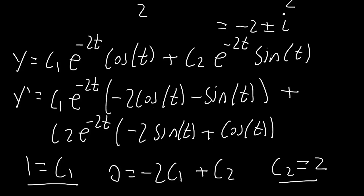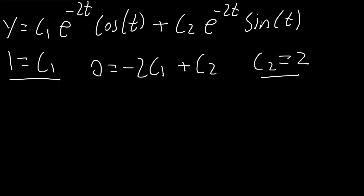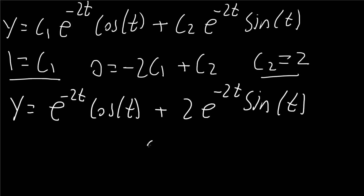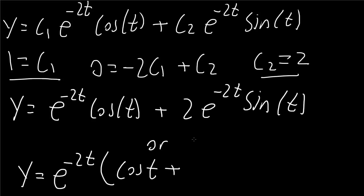Now we use the general equation and plug in c1 equals 1 and c2 equals 2. The answer is y equals e raised to negative 2t cosine t plus 2e raised to negative 2t sine t. We can factor this as y equals e raised to negative 2t times (cosine t plus 2 sine t). That is our final answer.